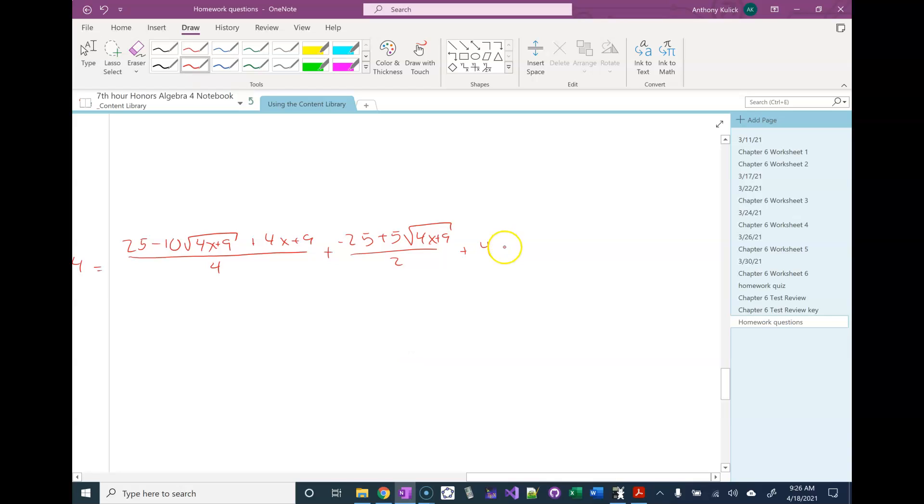And then I'm going to make a common denominator. So my denominators are 4, 2, and 1. So my least common denominator would be 4. So I'm going to multiply this one by 2 over 2, and this one by 4 over 4.